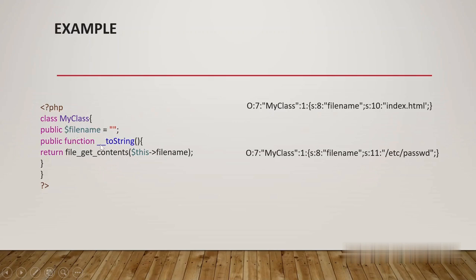There is a function called __toString that is performing some methods on the user input coming from the client side. This is a small code snippet. How the serialized object of this class would look like: the capital O stands for object, meaning we are creating an object of MyClass. MyClass has seven characters — that is why we have written 7 here. The number of variables assigned to the object is 1, that is file_name. The length of the file_name string is 8, the type is string, and the value assigned is index.html.